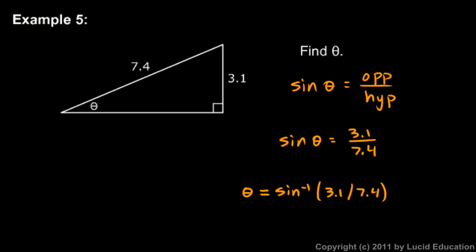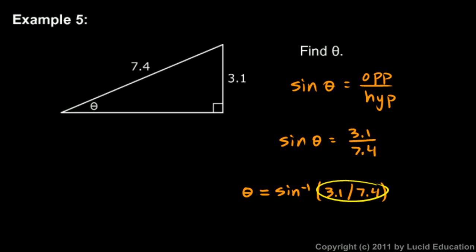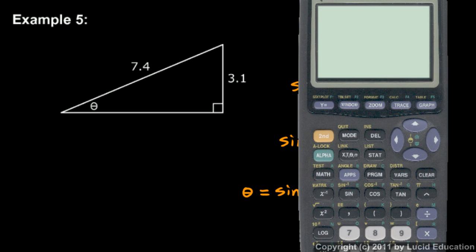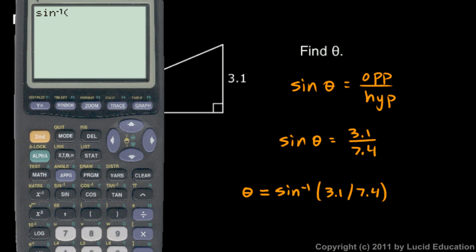If you just leave this in place like this, the calculator will compute this and use all of those digits to do the inverse sine. So let's do it that way. I'm going to type it in exactly as you see it there. Inverse sine of 3.1 divided by 7.4 and hit enter. And that's 24.77 degrees.